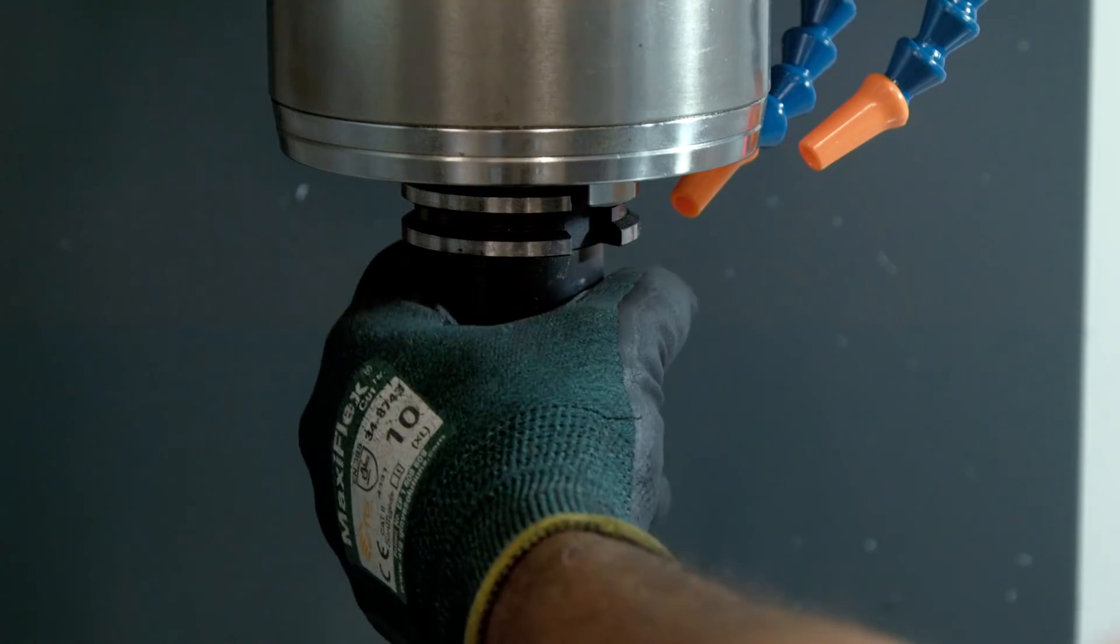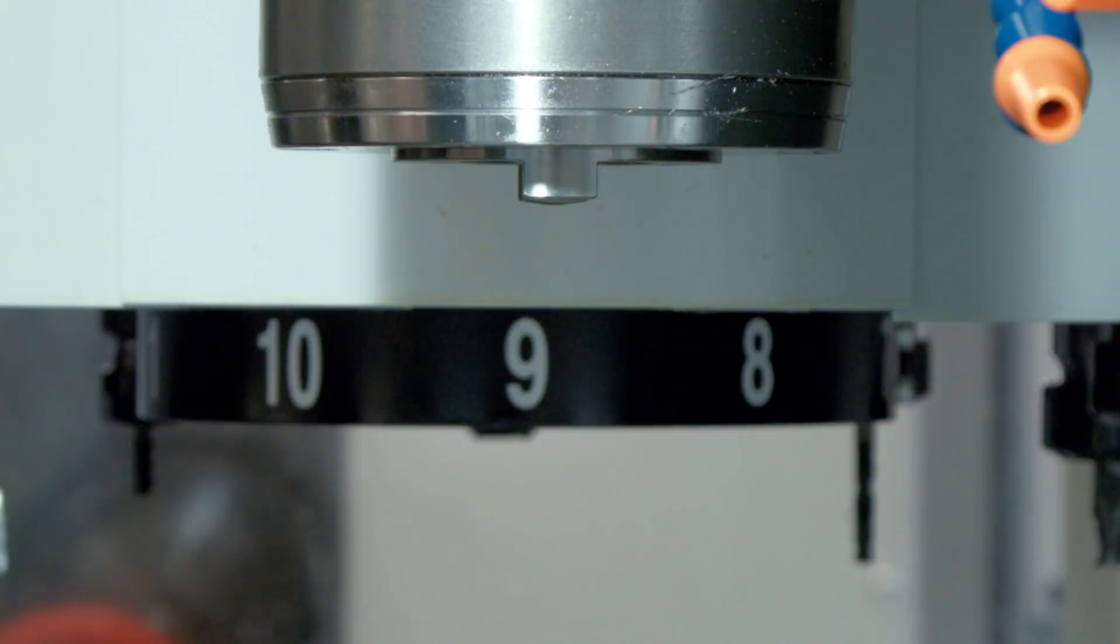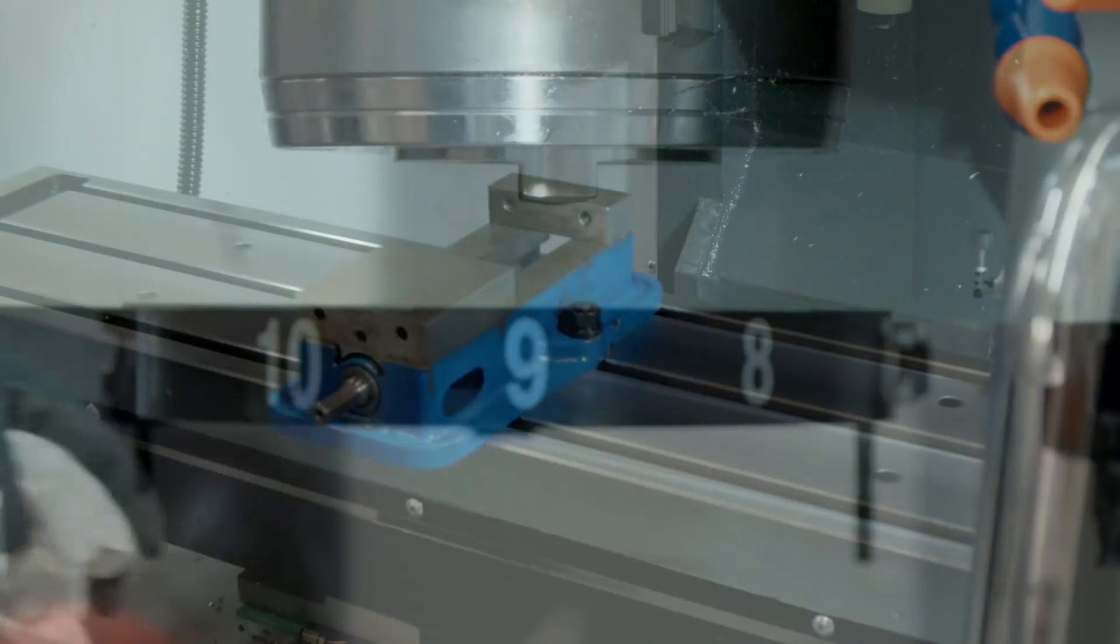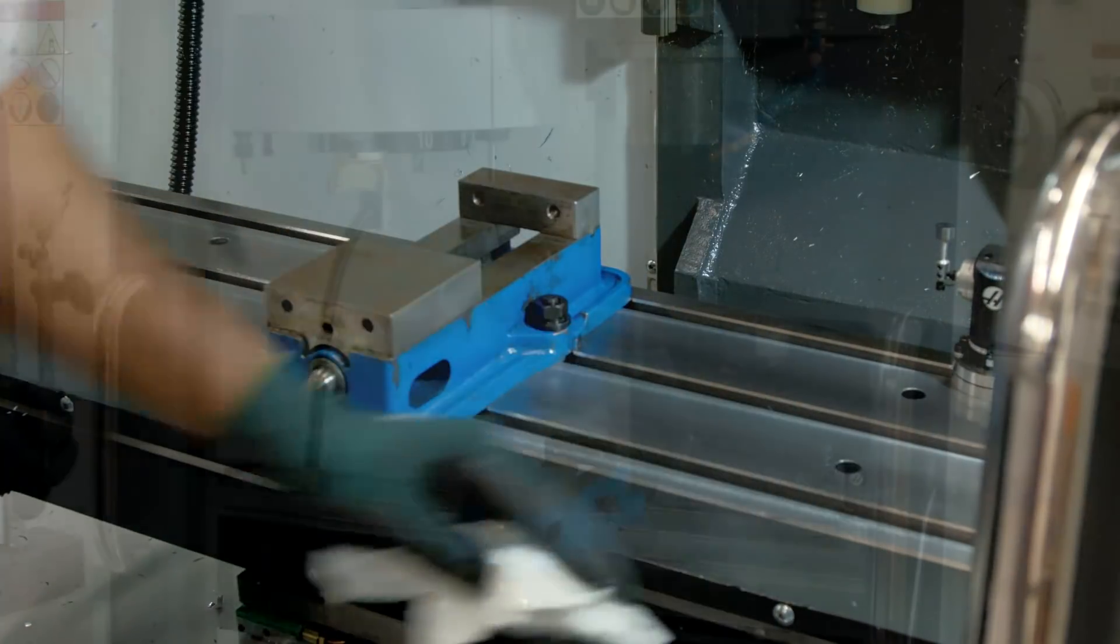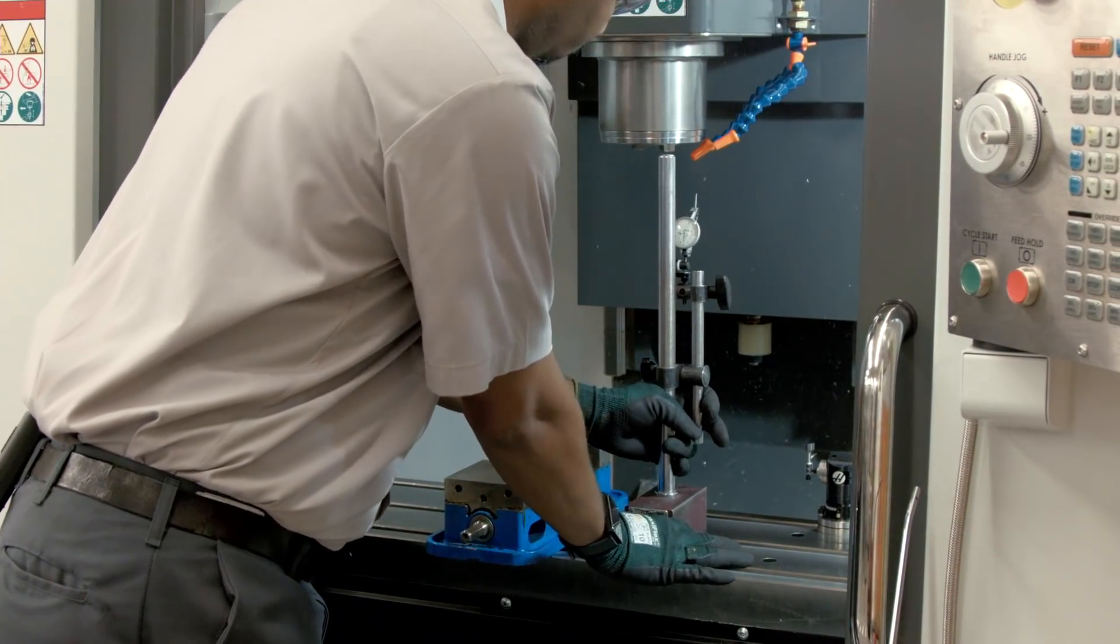Remove the tool from the spindle and make sure the pocket facing the spindle is empty. Clear a spot on the table. A magnetic base and a dial indicator setup is all you need for this process.